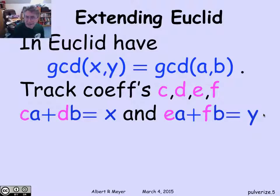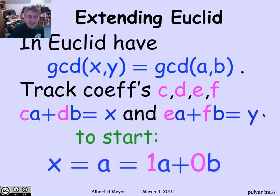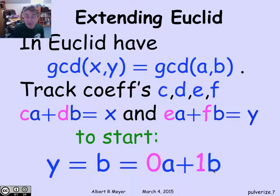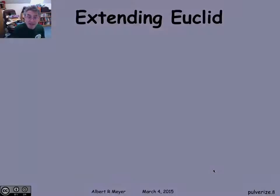How do we get initial values for c, d, e, and f? At the start, x is a, so c is 1 and d is 0, because a is 1a plus 0b. Similarly, y is 0a plus 1b. So we know what these values of c, d, e, and f are at the start of the algorithm. The question is, how do we update them?